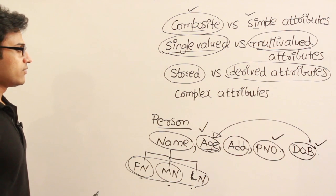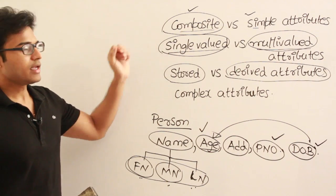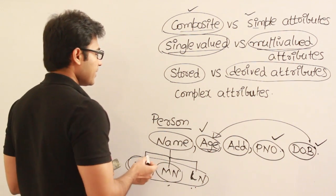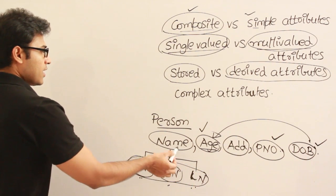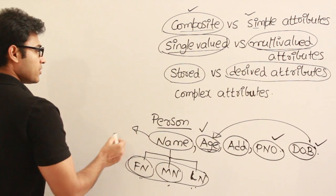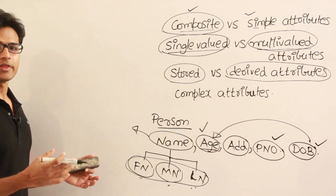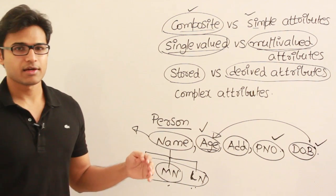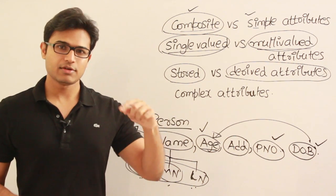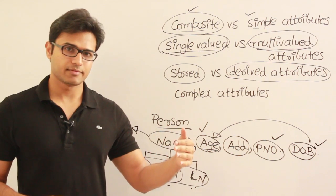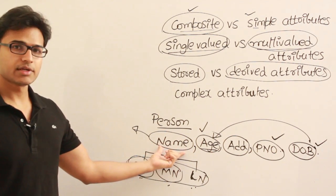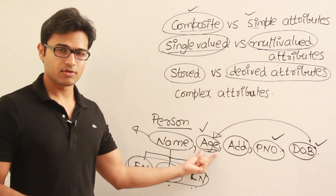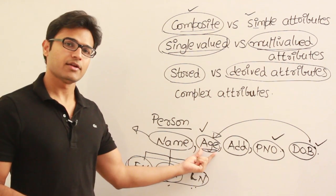If an attribute belongs to one category, it doesn't mean it cannot belong to another. For example, name is a composite attribute as well as a single-valued attribute, because a person can have only one name. Even though the name contains many subparts, it doesn't mean a person has many names. Age is a single-valued attribute with only one value, but it can also be derived — so it is single-valued as well as derived.